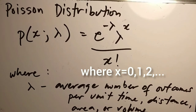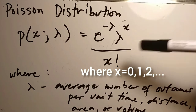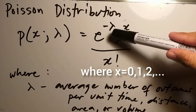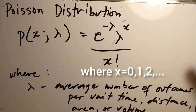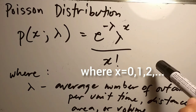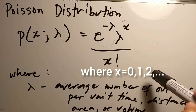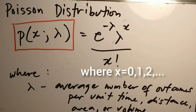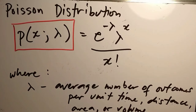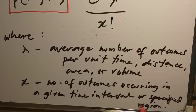Next, we have the Poisson distribution. The probability distribution of the Poisson is: p(x; λ) = e^(−λ) · λ^x / x!, where e is approximately 2.71828. The notation for the Poisson distribution with parameter λ is p(x; λ). Here, λ is the average number of outcomes per unit time, distance, area, or volume, and x is the number of outcomes occurring in a given time interval or specified region.